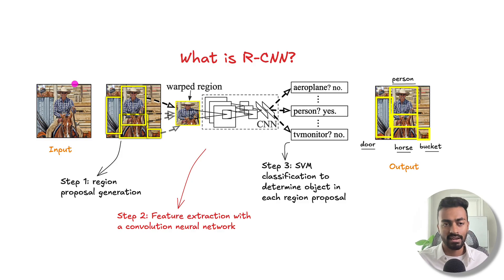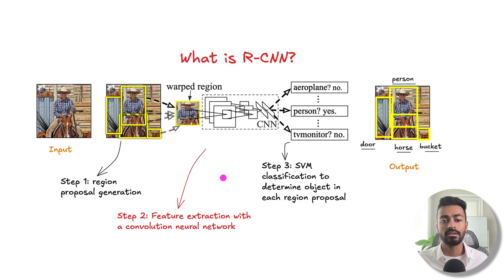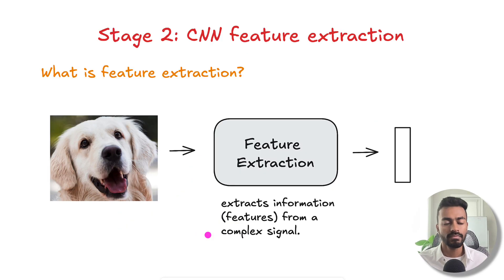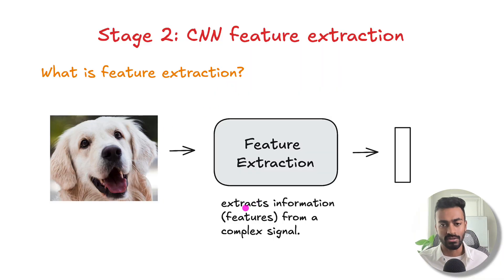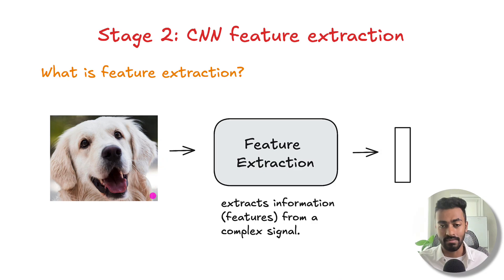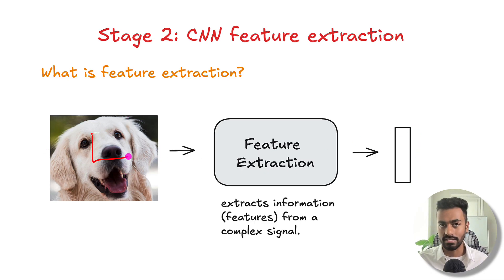Now that we've taken an input image and added 2000 bounding boxes as region proposals, let's walk through feature extraction with a convolutional neural network. Feature extraction takes an input image and extracts important information or features from this complex 2D signal, producing a vector representation of either the entire image or just part of it.